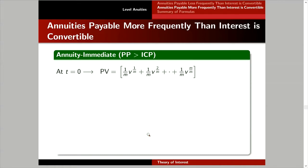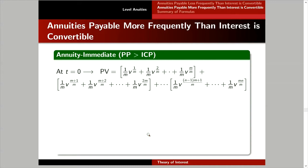At time 0, the present value consists of terms grouped by interest conversion period. The first set of terms represents payments in the first ICP, the second set covers the second ICP, and the last set covers the nth ICP. Please verify each term and confirm the exponents are correct.